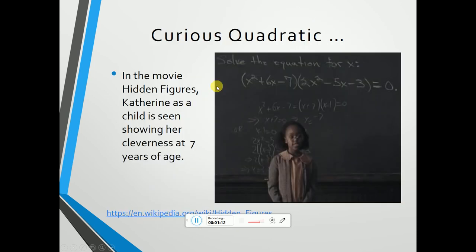In the movie Hidden Figures, Katherine, seen here as a child at 7, is very clever. You can see on the blackboard behind her: x squared plus 6x minus 7, multiplied by 2x squared minus 5x minus 3, and that product equals 0.